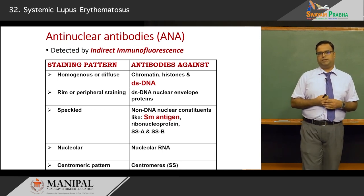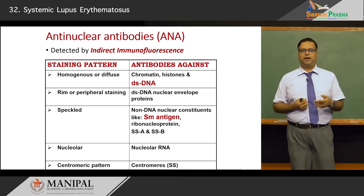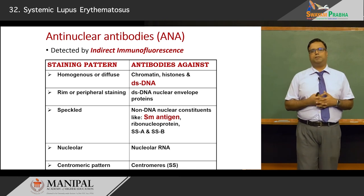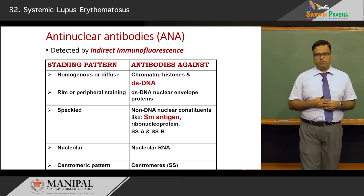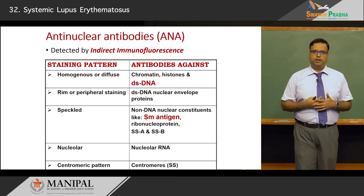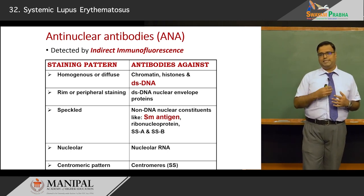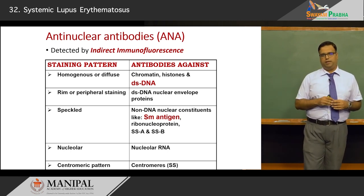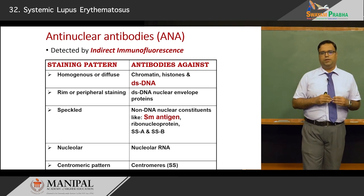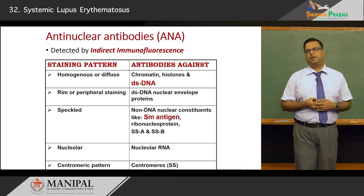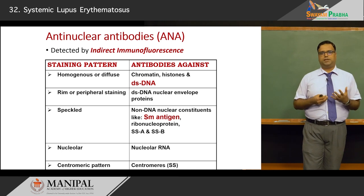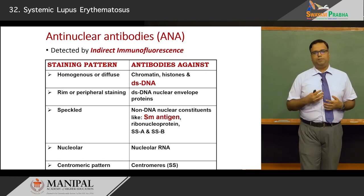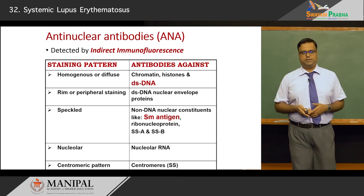To summarize: the homogeneous pattern is typical for double-stranded DNA; RIM or peripheral staining is an envelope protein pattern; speckled pattern involves SM antigen and is specific for SLE; nucleolar and centromeric patterns make up the rest. These five patterns are demonstrated by indirect immunofluorescence.